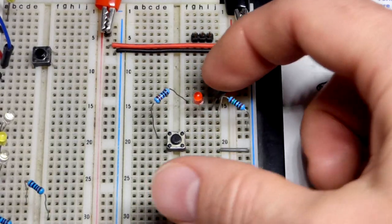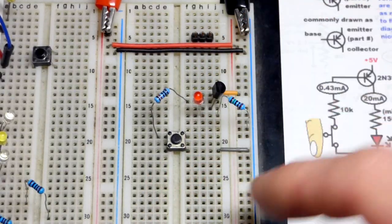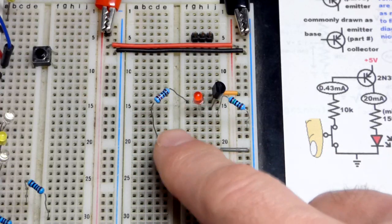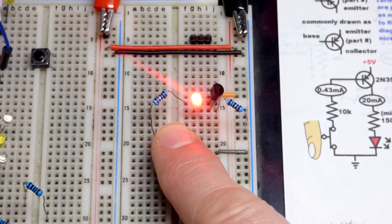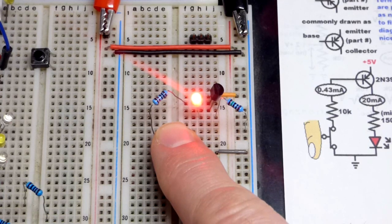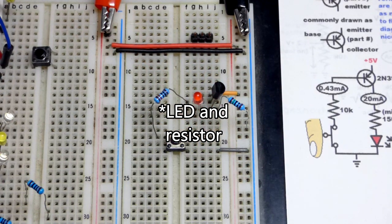Here we have a PNP bipolar junction transistor. It needs a little bit of emitter-base current in order to allow a lot more emitter-to-collector current. In this case, the LED is limiting the current.